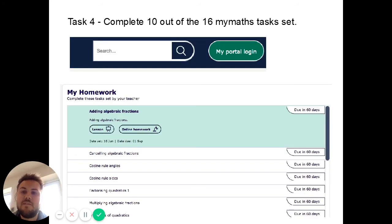Now task four I've emailed you out your passwords and logins for MyMaths. I have set 16 MyMaths tasks, now you only have to complete 10 of them and they are all really important parts of GCSE Maths that you need to know for A Level, so things like cosine rule, factorising quadratics, multiplying algebraic fractions, adding algebraic fractions. Once you've logged in you press on My Portal and it has My Homework and you've got to basically do 10 tasks from there and that has to be done by the first lesson in September. If you've lost your password just email me and that's really important and we can see your scores as well and then we can see how much you've done.